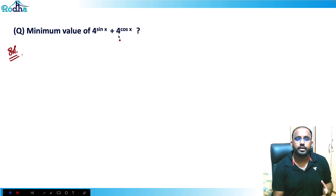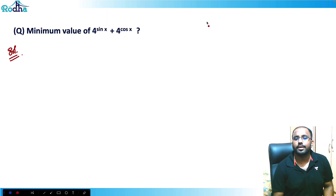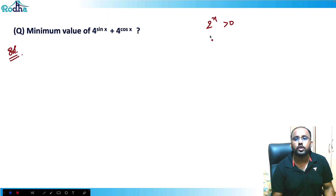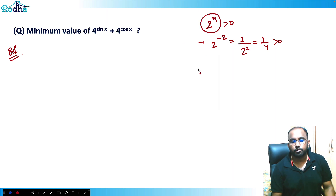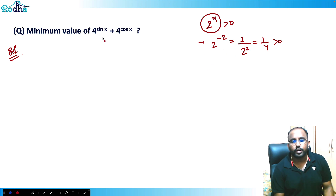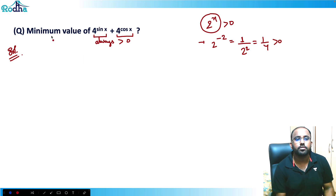It's not mentioned whether these quantities are positive or negative, but we should know that all exponential functions are always positive. For example, 2^x is always positive — if x = −2, it becomes 1/4. You can never make an exponential function negative. So 4^(sin x) and 4^(cos x) are always positive real numbers.